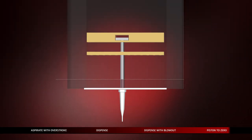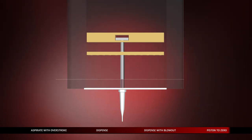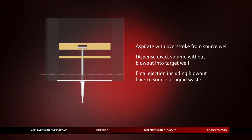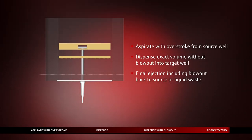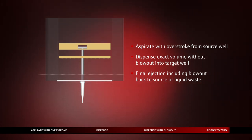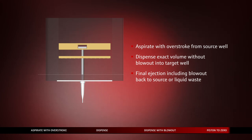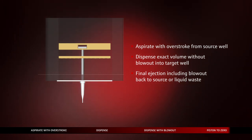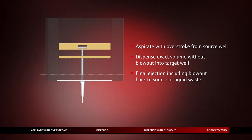To summarize, reverse pipetting is aspirate with overstroke from a source well and dispense the exact volume without blowout. Final ejection includes blowout volume back to source or into the liquid waste.